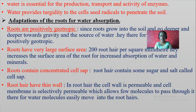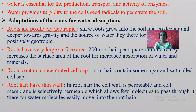Roots contain concentrated cell sap. The salt concentration inside the cell sap is more, so automatically it absorbs more water. If it is dilute, it will absorb less water. Root hair contains sugars as well as salts called cell sap, stored in the vacuole. If the concentration of cell sap is more, automatically the root hair cells absorb more water.